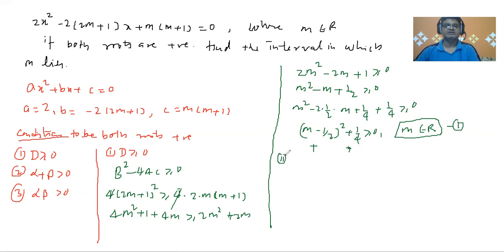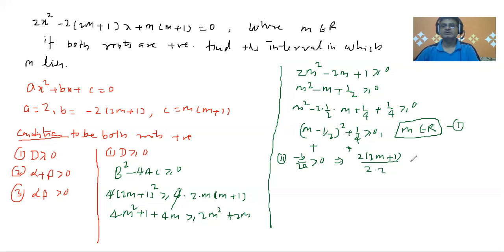Now for the second condition: alpha + beta = −b/a should be greater than 0. That means 2(2m+1) / (2·2) > 0, so 2m + 1 > 0, giving m > −1/2. This is the second solution.